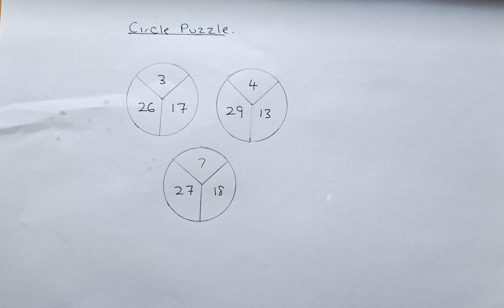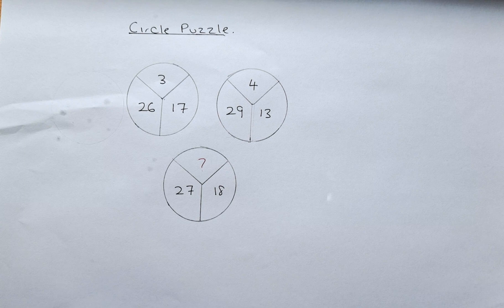And in the last circle, the numbers are question mark, 27, and 18. What is the missing number?